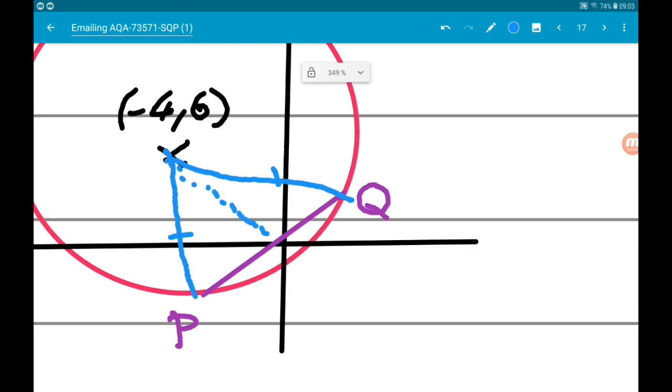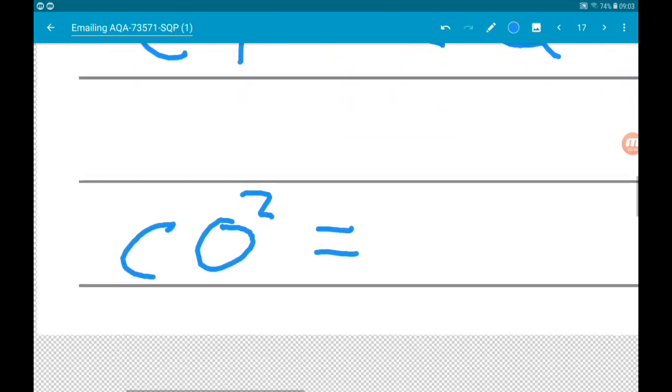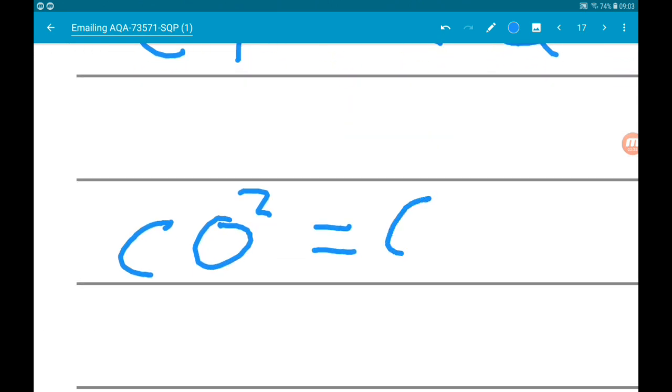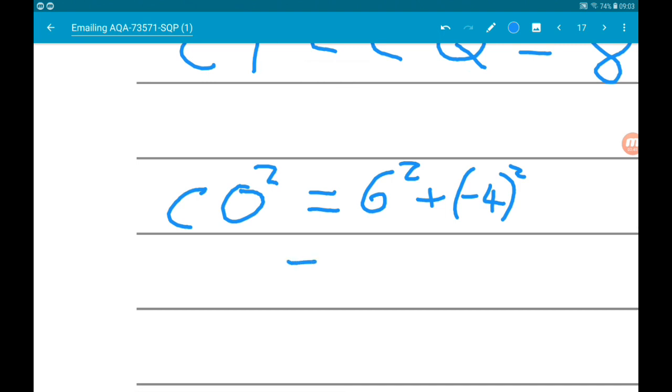The length C to O is well it's going to be the height squared and the length squared. So it's 6 squared and minus 4 squared. So this is 36 and 16 which is 52. So we now know the length.